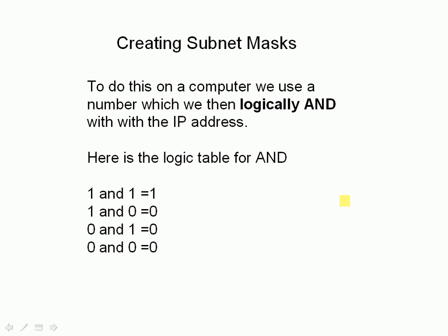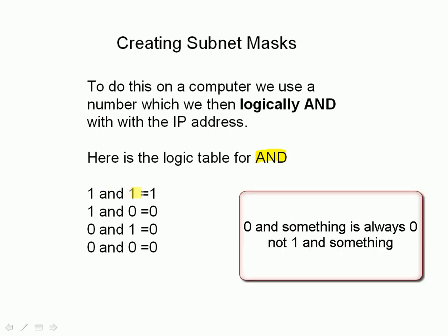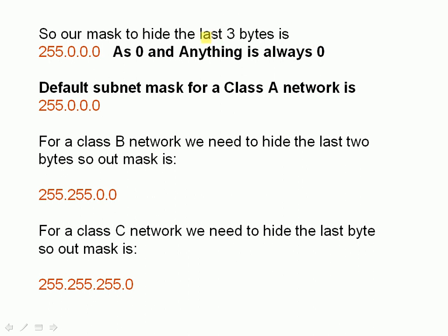If you're not familiar with it, this is the logical AND table: one AND one is one, and one AND anything else is always zero. Basically, to get rid of something, you AND it with a zero. So for our subnet mask, if we want to get rid of the last three bytes in a class A address, we just AND those with zero. Our default subnet mask for a class A address is 255.0.0.0.